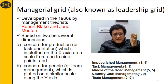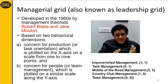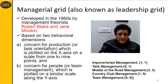On the y-axis is the manager's concern for people. So the x-axis is task orientation, and the y-axis is people orientation. Both the x-axis and the y-axis use a scale of one to nine.